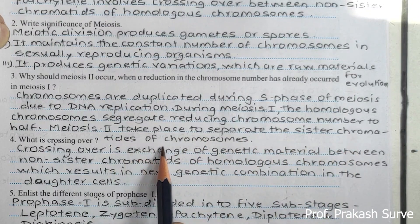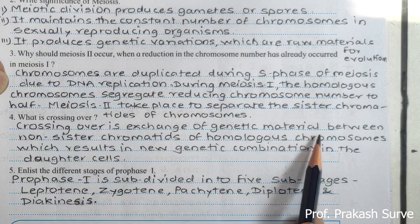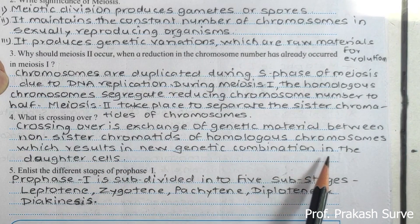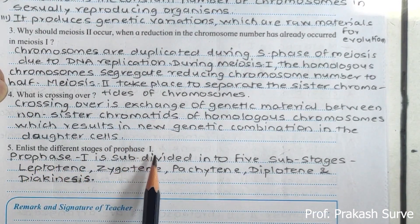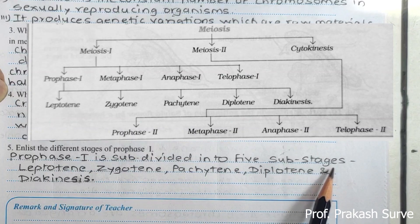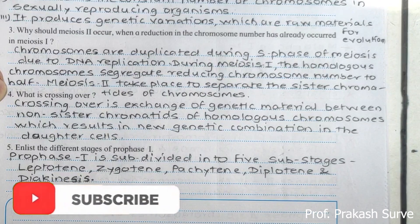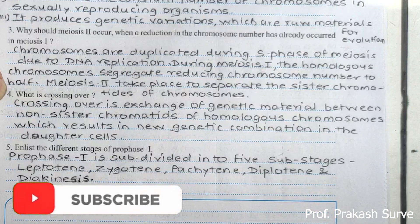Meiosis two then takes place to separate the sister chromatids of the chromosomes. Crossing over is the exchange of genetic material between non-sister chromatids of the homologous chromosomes, which results in new genetic combinations in the daughter cells. Prophase one is subdivided into five sub-stages: leptotene, zygotene, pachytene, diplotene, and diakinesis.